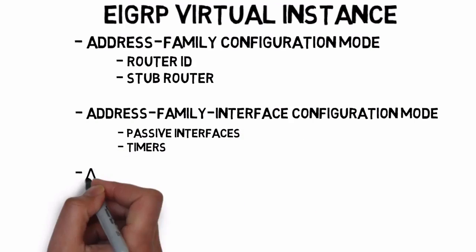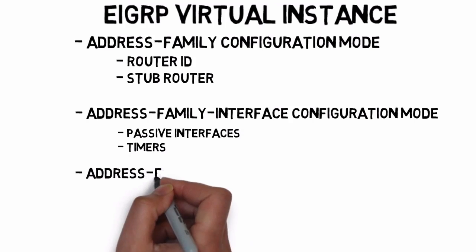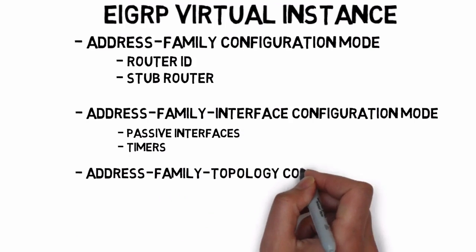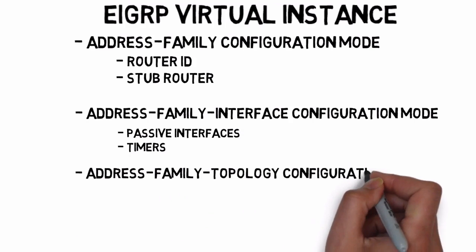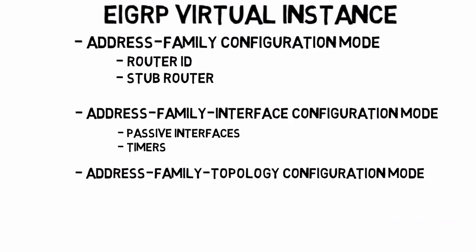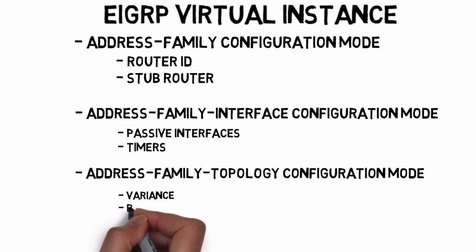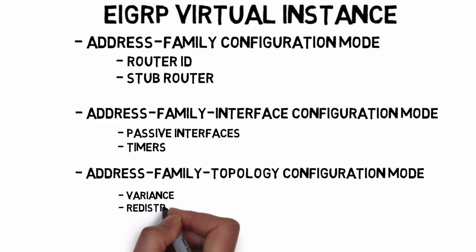There's also an address family topology configuration mode. Here we enter commands that have a direct impact on the router's EIGRP topology table — for example, setting up the variance feature or setting up the redistribution feature.